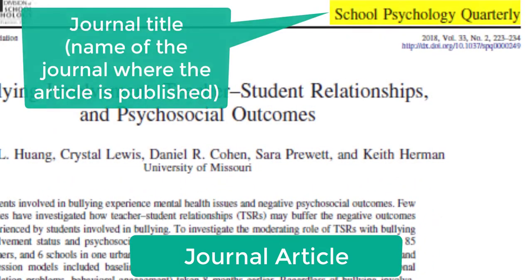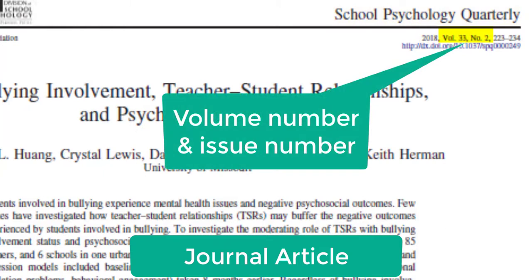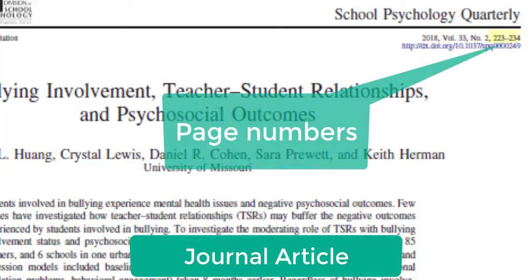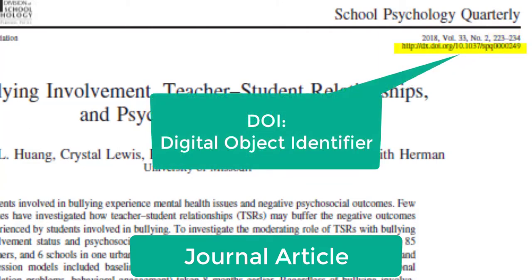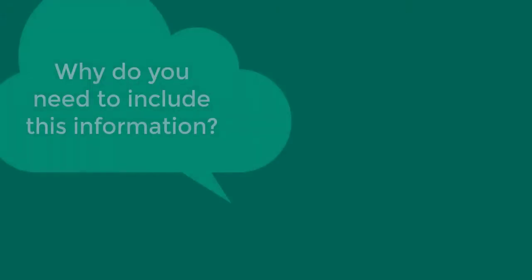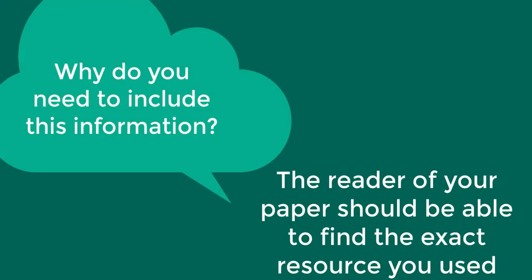You'll see the journal title — the name of the journal where the article is published. You'll also see the year of publication and the volume and issue numbers, which show exactly when the article was published. The volume always comes before the issue number, and sometimes there is no issue number. You'll also need to include the page numbers and the DOI if your article has one. DOI stands for Digital Object Identifier, and it's a unique identifier specific to each article. These details are needed in your reference list citations so the reader can locate the exact resource you used.